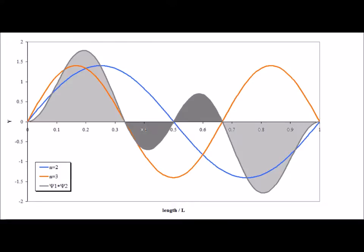Last but not least, we look at the n equals 2 and n equals 3 eigenfunctions. The product of the two functions is the area shown in gray, and we've broken it up into two different types of regions: one shaded gray, one shaded dark gray.